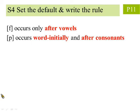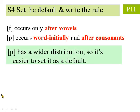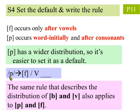Next, we find the default form and write the rule. We begin by stating our previous conclusion and observe that p has a wider distribution because it can occur not only after consonants but also word initially. So it's easier to set it as the default and then write the rule. If the sound p occurs after a vowel, it becomes the sound f. It's easy to see that the same rule that describes the distribution of b and v also applies to p and f.